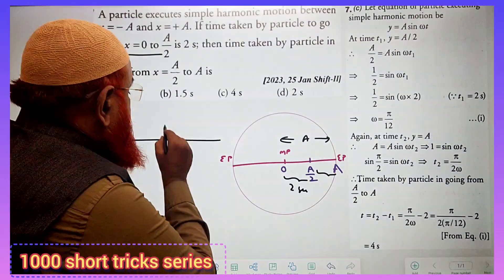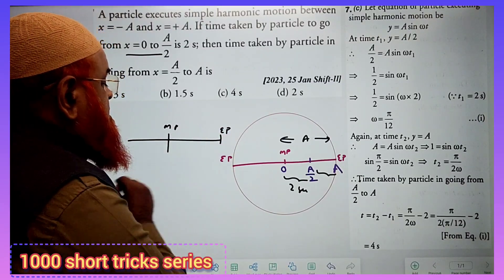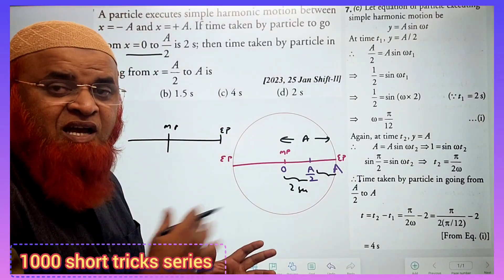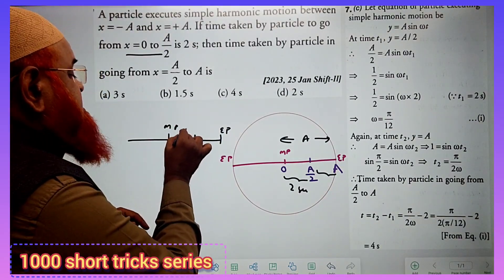This is a simple harmonic motion. From mean position to extreme position, when a body is oscillating, you know exactly at the middle, which is taken as A by 2.